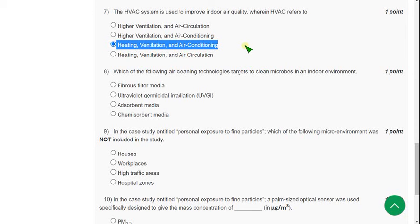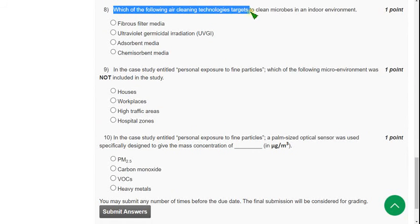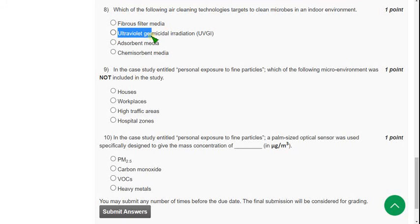Which of the following air cleaning technologies targets to clean microbes in an indoor environment? For the eighth question, the correct answer is second option: ultraviolet germicidal irradiation (UVGI). So mark second option. Moving on to the ninth one.